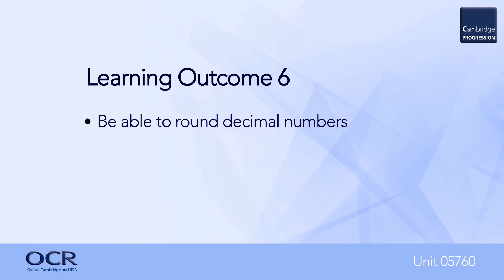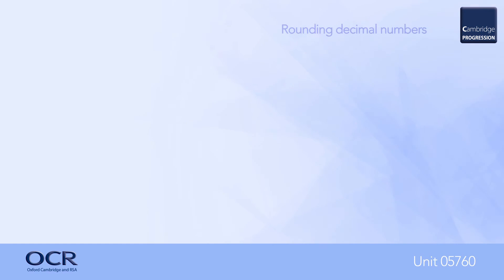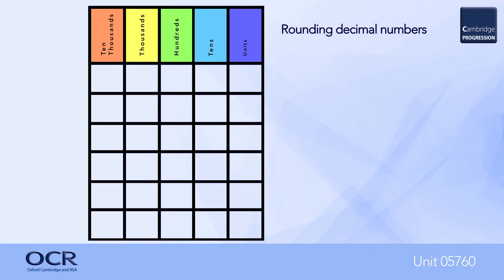For learning outcome number six, learners must be able to round decimal numbers. More specifically, rounding decimal numbers to an appropriate or given degree of accuracy. Learners must be familiar with the place value system as indicated by the column headings shown here.